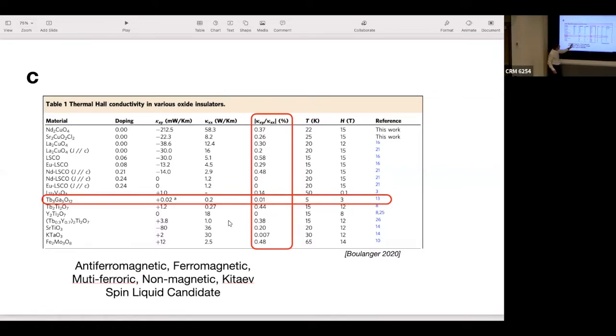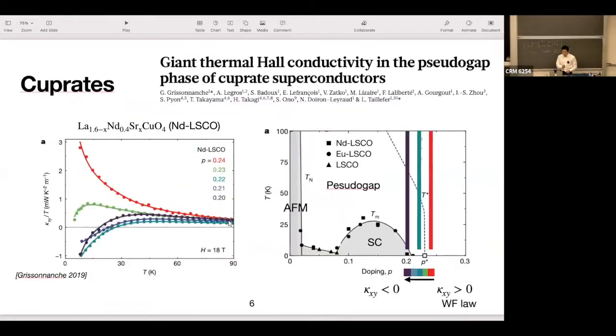Other than the fact that they're pretty strong compared to the 2005 Strom's experiment, also the sign is different. You see, this is positive, and these are negative. They go in different directions, which is another sign that they may come from different microscopic mechanisms.